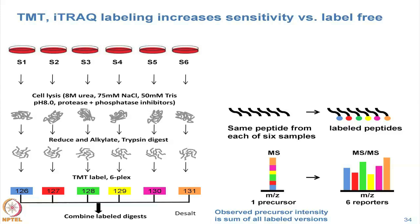For a TMT6 chemical labeling approach, you would have six samples, lyse each to get proteins, reduce and alkylate, then trypsin digest into peptides. After you have peptides, you use the TMT labeling agent — amine chemistry based reagents that put a label on the side chain of lysine and on the N-terminus of the peptide. The reagent normally comes in six channels, distinguished by reporter ion masses present in the MS/MS spectrum.